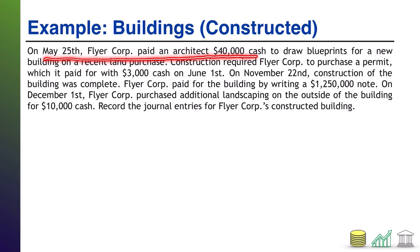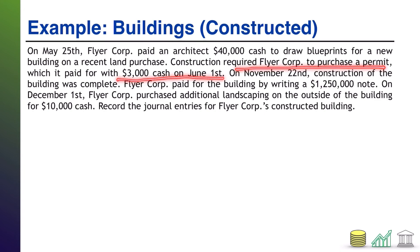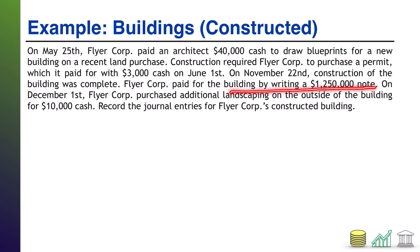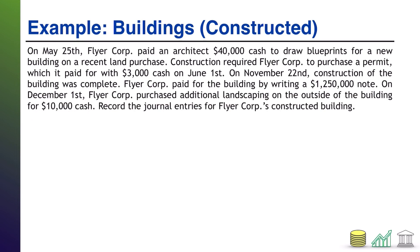Now let's look at a constructed building example. On May 25th, Flyer Core paid an architect $40,000 cash to draw blueprints for a new building on a recent land purchase. Construction also required a permit, paid for on June 1st for $3,000 cash. On November 22nd, construction was complete and Flyer Core paid by writing a $1.25 million note. On December 1st, Flyer Core purchased additional landscaping for $10,000 cash. We have four journal entries to record.